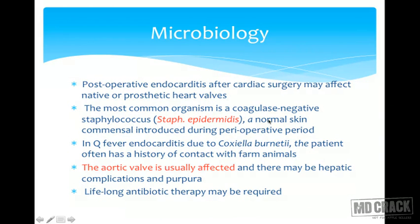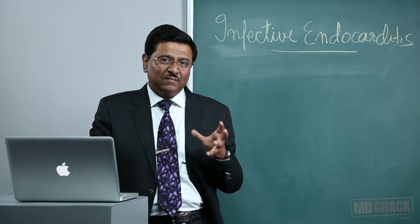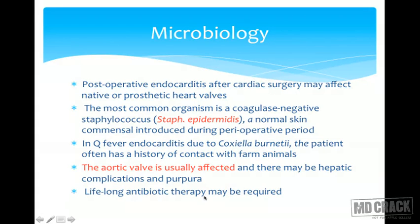Postoperative endocarditis after cardiac surgery may affect native or prosthetic valves. The most common organism is coagulase-negative Staphylococcus epidermidis, a normal skin commensal introduced during the perioperative period. In Q fever endocarditis due to Coxiella, the patient often has a history of contact with farm animals; the aortic valve is usually affected and there may be hepatic complications and purpura. Lifelong antibiotic therapy may be required in such cases.